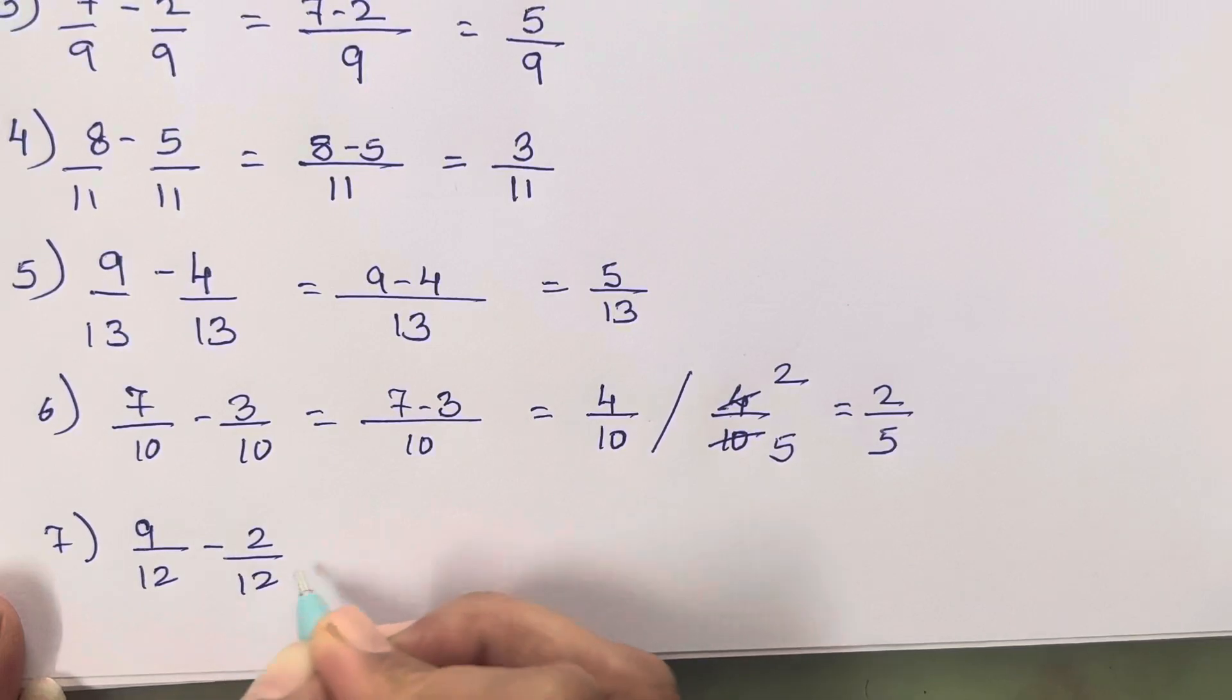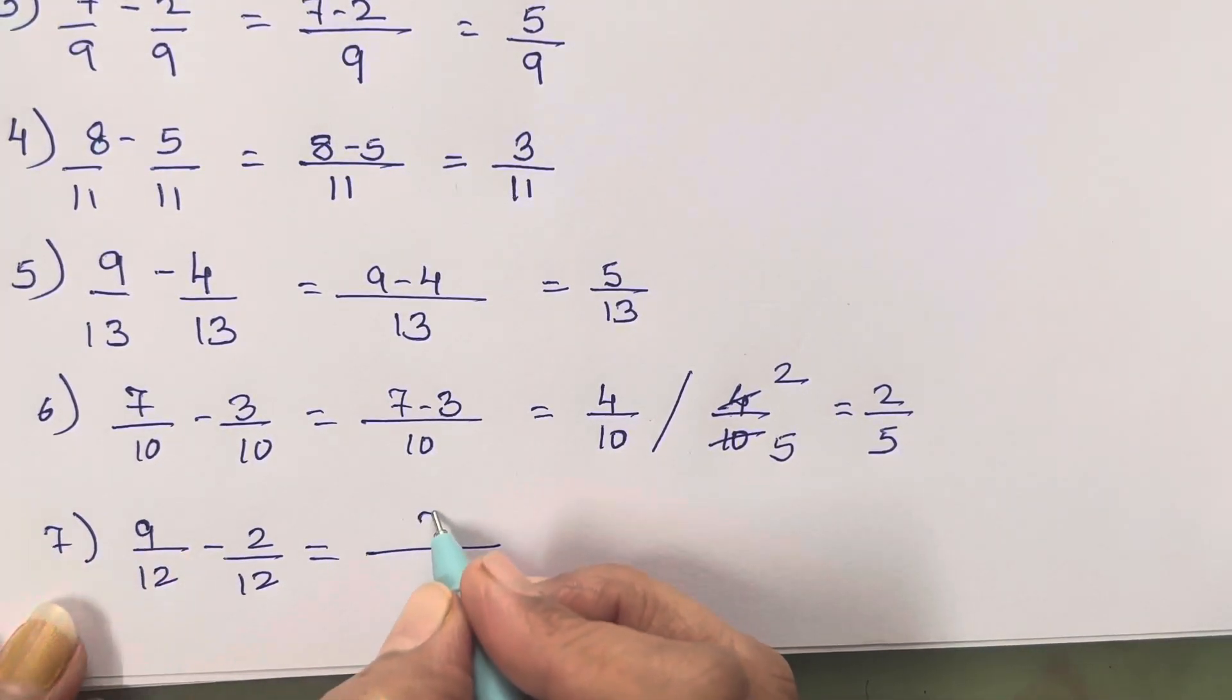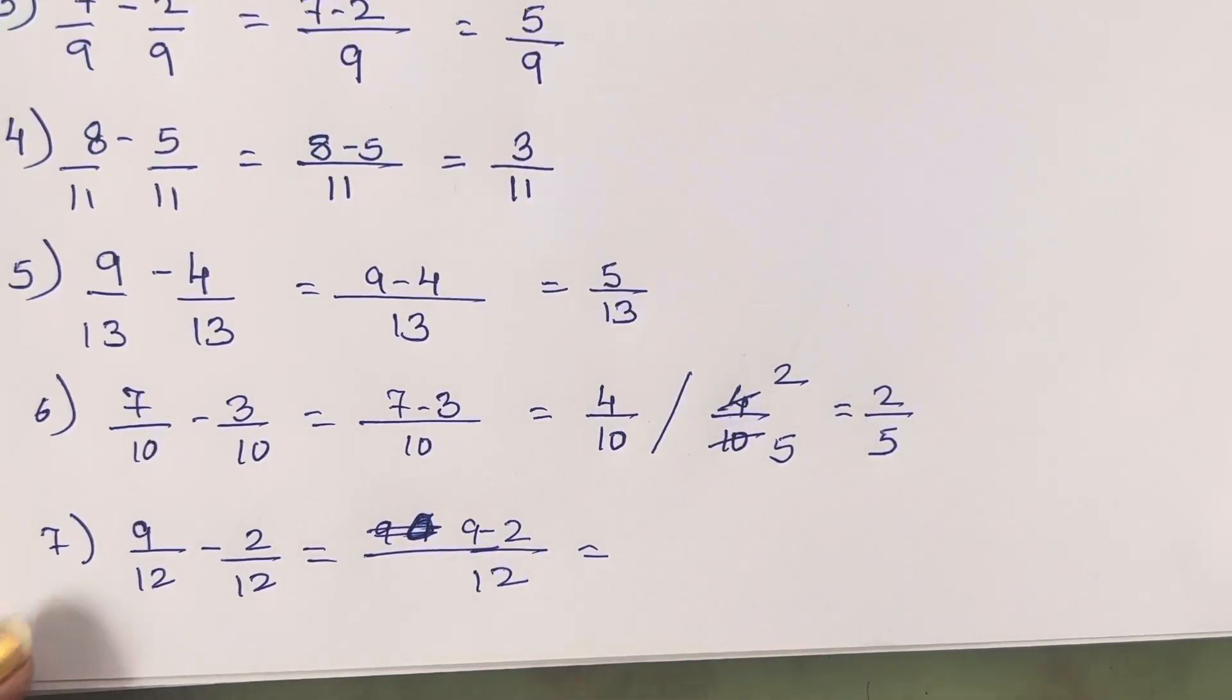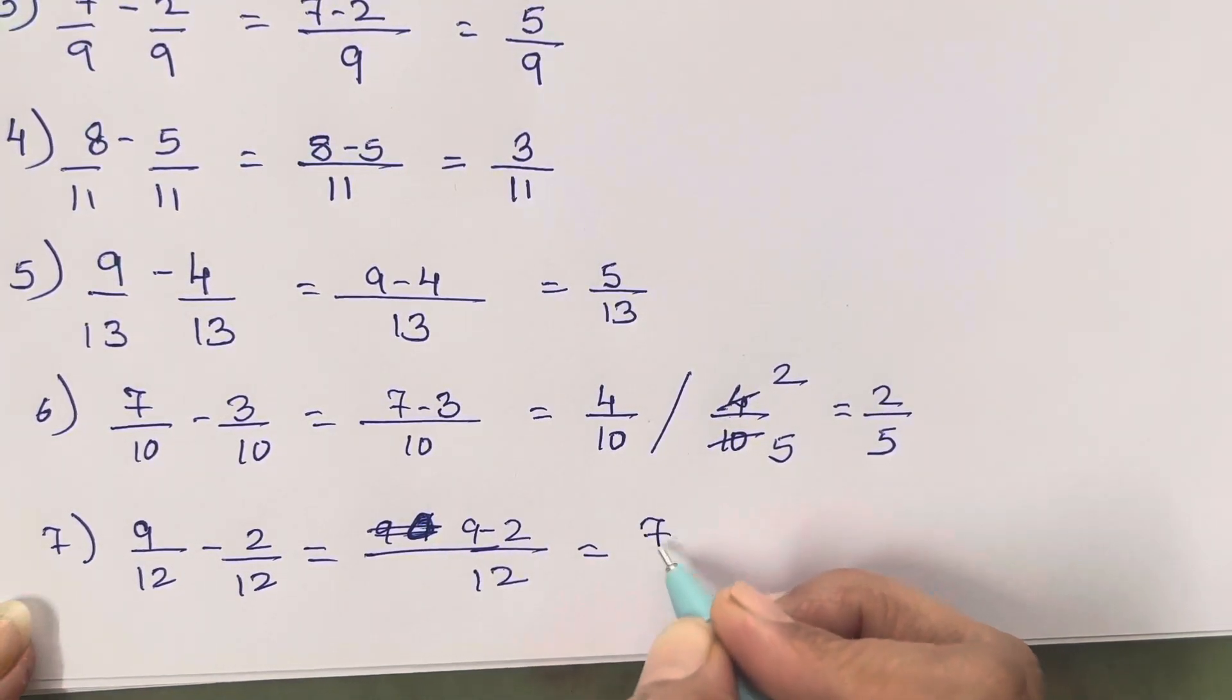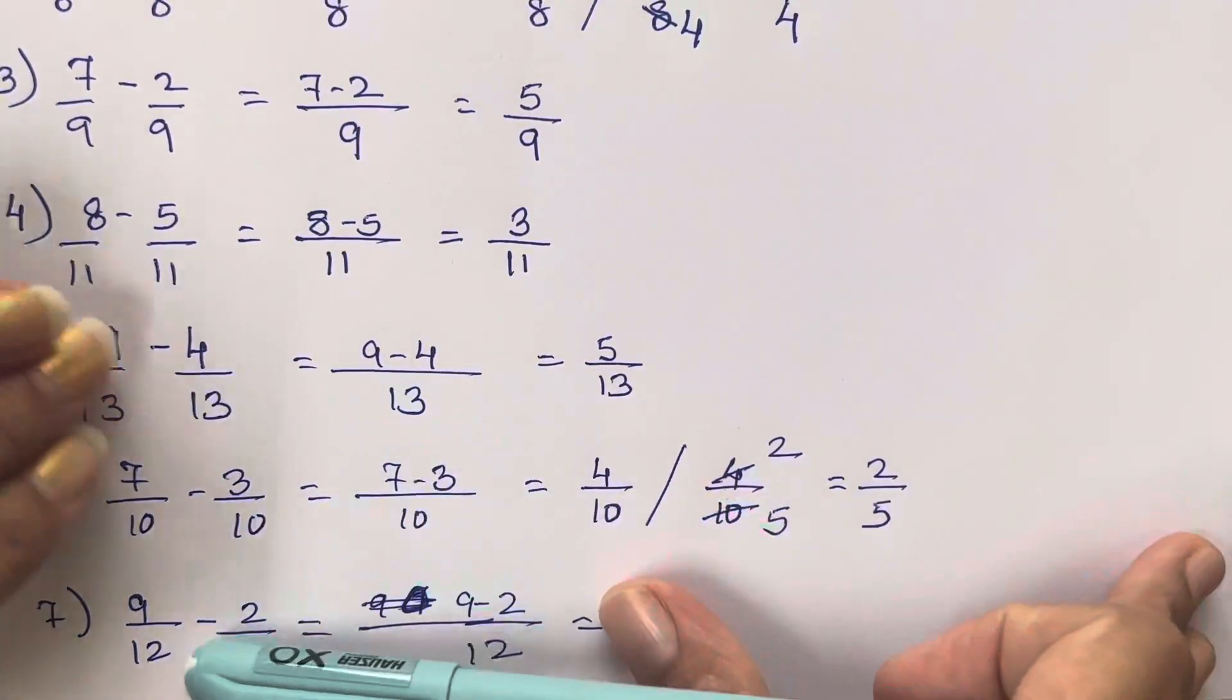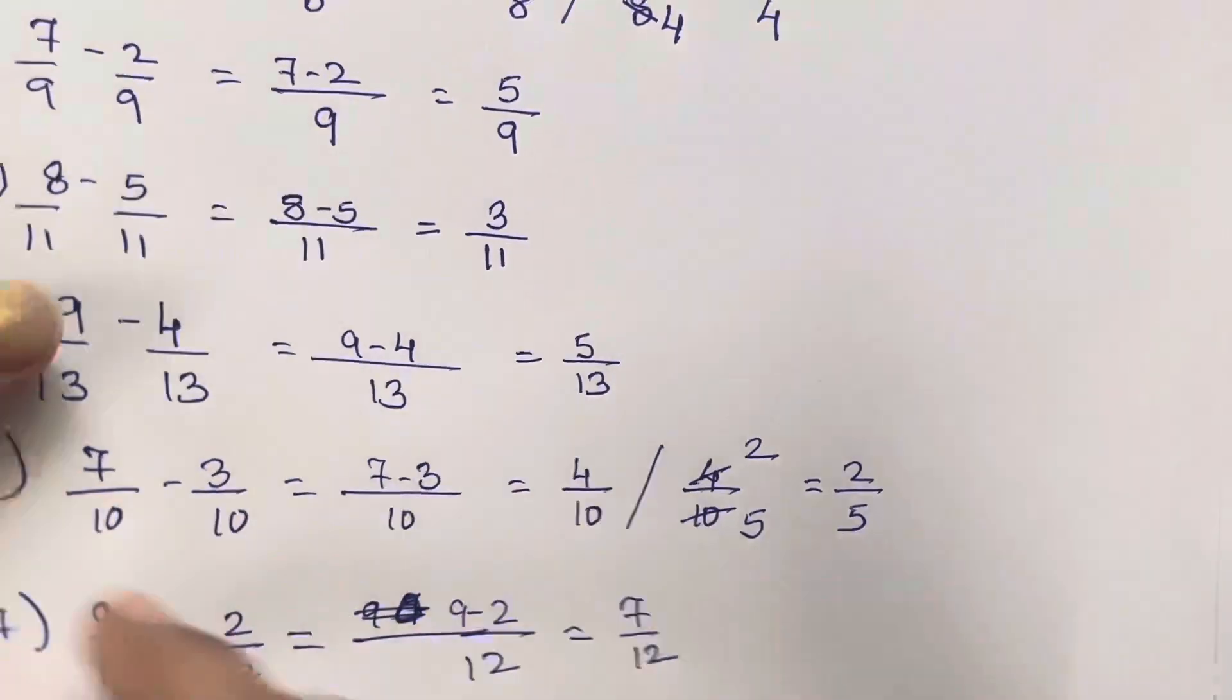Now the seventh one is 9 upon 12 minus 2 upon 12, so 9 minus 2 is going to be, we will write the steps, not directly. We are not going to write the answer directly. We will write the steps, so 9 minus 2 is going to be 7 upon 12. Okay, now by now you all have understood the technique, so it is going to be very easy for you all to solve it.